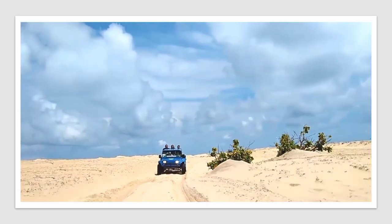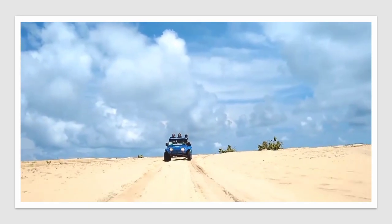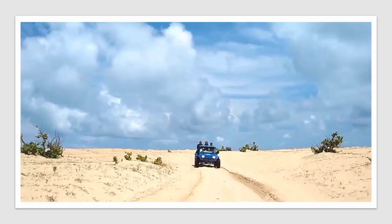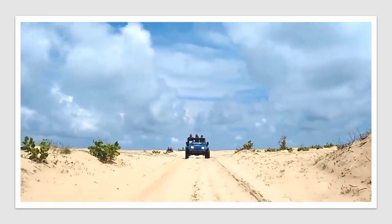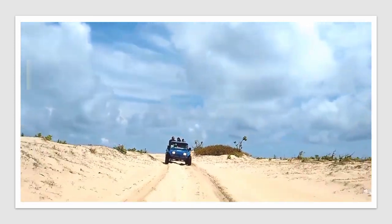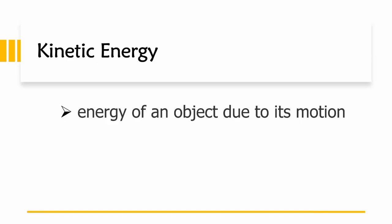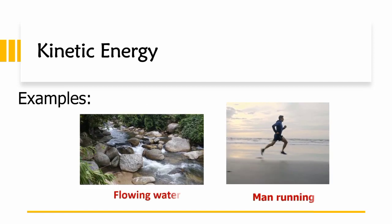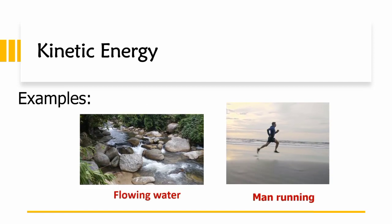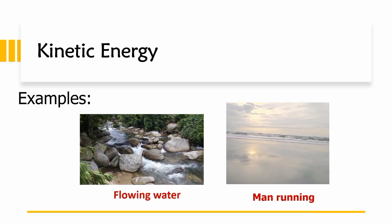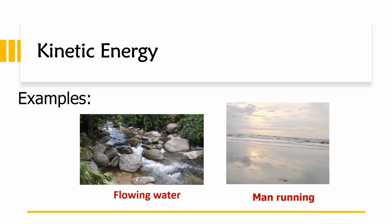How about kinetic energy? A moving object is capable of doing work. It has energy of motion. This energy is called kinetic energy. Kinetic energy is the energy of an object due to its motion. Examples: flowing water, a man running. Since these objects are in motion, they possess kinetic energy.